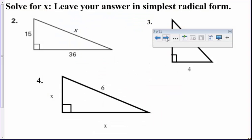Let's do a couple more. If you see in the directions, it says leave your answer in simplest radical form if it's not a whole number. So let's do number two. X, once again, is our C. So we're going to do X squared equals 15 squared plus 36 squared.